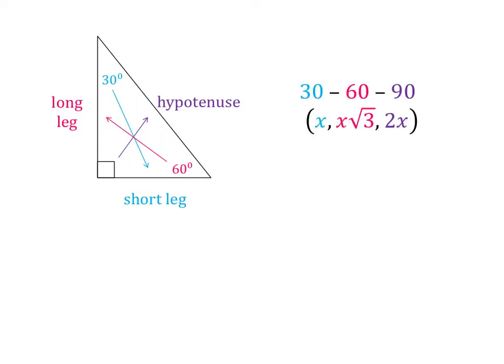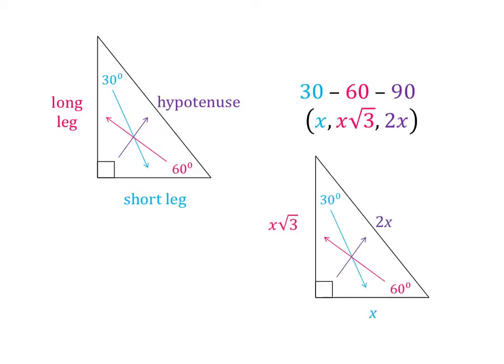On the previous screen, we found that the length across from 30 was x, the length across from 60 was x√3, and the length across from 90 was 2x. This is a pattern you can use for any 30-60-90 triangle. Across from the 30 will be side x, across from the 60 will be side x√3, and across from the 90 will be side 2x.